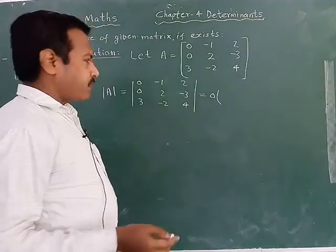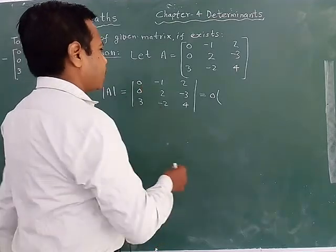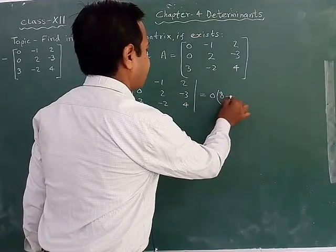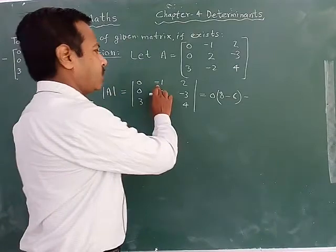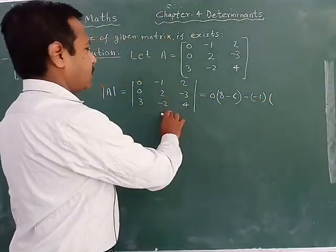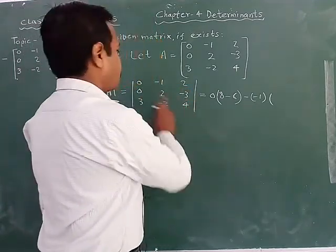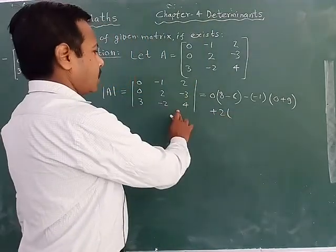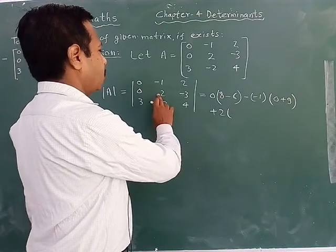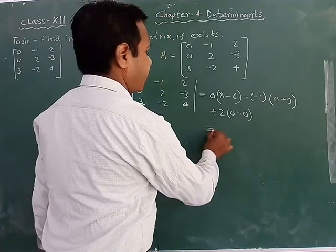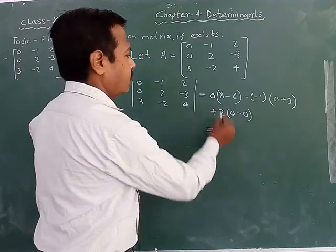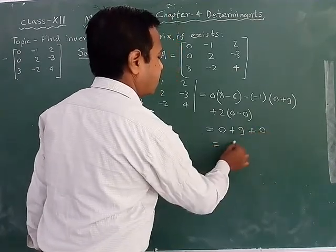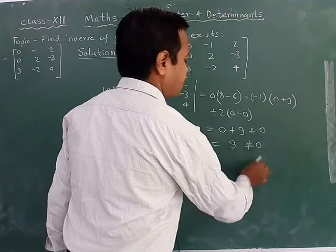You have to expand it. Cover the first row and first column, then expand. You get 8 minus 6, which is 2. Then cover the second column and second row, you get 0 plus 9. Then cover the third column and third row, you get 0 minus 0. So the expansion of this determinant equals 0 plus 9 plus 0, which is equal to 9.